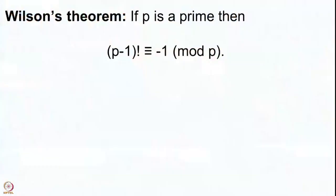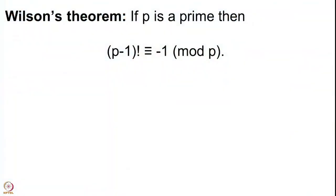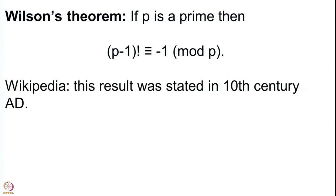Now, this very important theorem is given the name of mathematician John Wilson, but as often happens in mathematics, it is not originally due to Wilson — not at all. It was stated in the 10th century AD, whereas John Wilson is a mathematician from the 18th century. Wilson did not solve this at all.